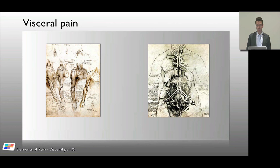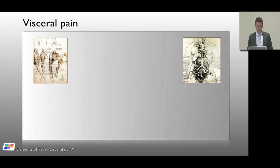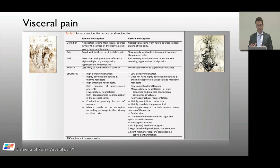Here are the fantastic diagrams from da Vinci, done way before anyone really got a sense of anatomy — he was way ahead of his time. You can see the viscera on one side, the internal structures of the thorax and abdomen, and then the somatic aspect — the body covering, muscles, joints, and skin. The best starting point is to consider the difference between visceral nociception and somatic nociception.